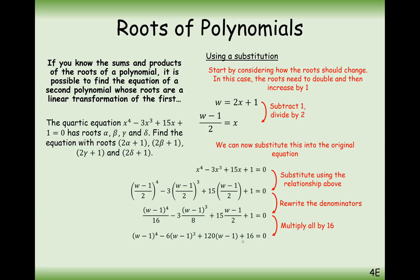And now we can expand this term here. Try and do it as efficiently as possible. You may be able to recall the binomial expansion rule from A level maths which is a good sneaky way of doing it. And to cut a long story short here is the final answer. So w to the 4 minus 10w cubed plus 24w squared plus 98w minus 97 equals 0. And this here will have roots of 2 alpha plus 1, 2 beta plus 1, 2 gamma plus 1, and 2 delta plus 1.